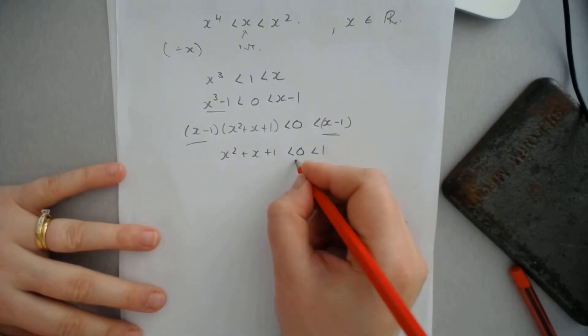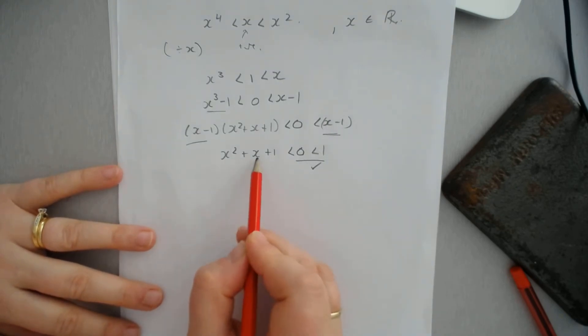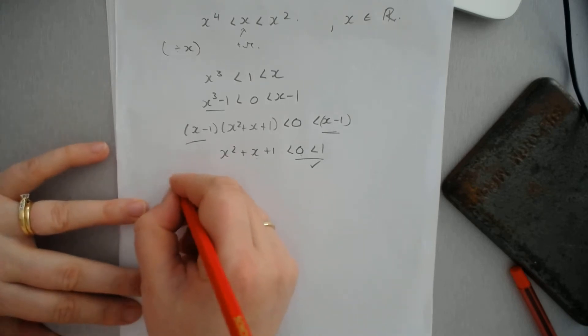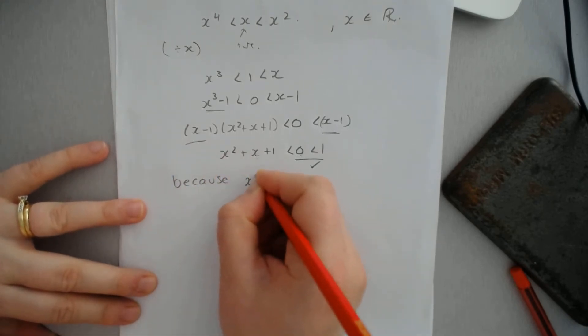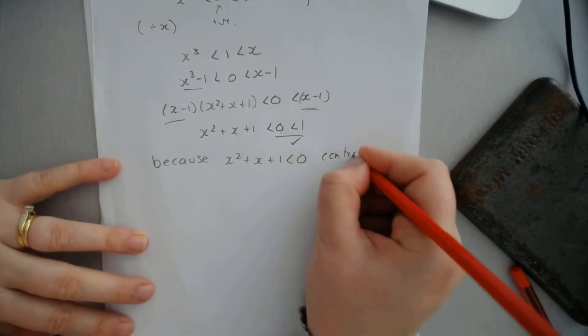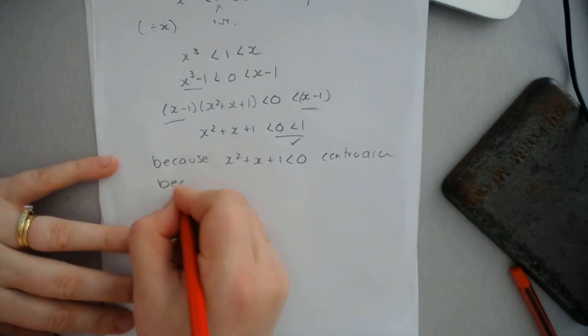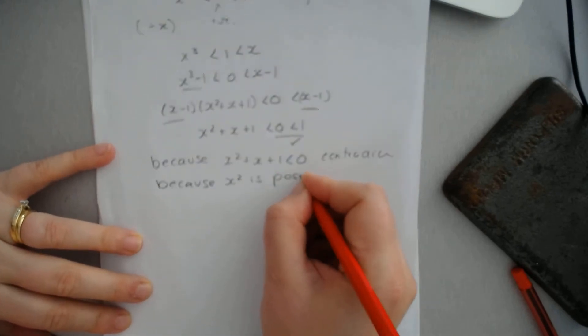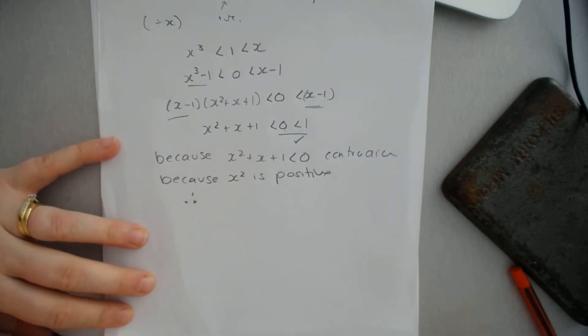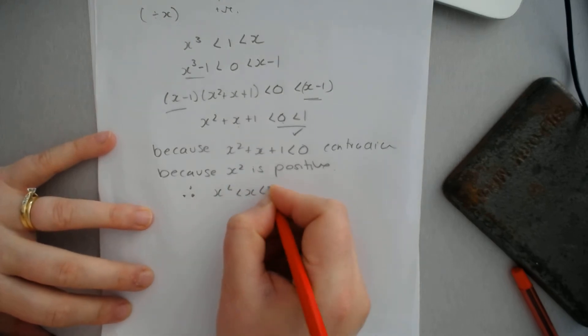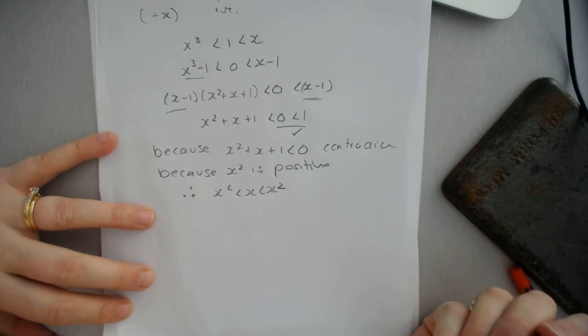Now, 0 is less than 1, which is correct. However, x² plus x plus 1 can't actually be less than 0. So there is our contradiction. We say because x² plus x plus 1 is less than 0, it's a contradiction because x² is positive. Therefore, x⁴ is less than x, which is less than x², must be false.